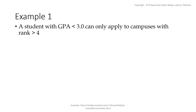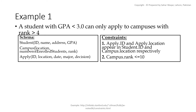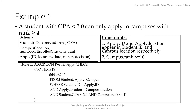Let's learn assertions from a simple example taken from the InfoLab Stanford database and modified slightly. We have three tables: Student, Campus, and Apply. The Student table contains student information. Campus contains three attributes: location, number of enrolled students, and rank — where rank represents the campus position among multiple campuses, with 1 being highest and 10 being lowest.